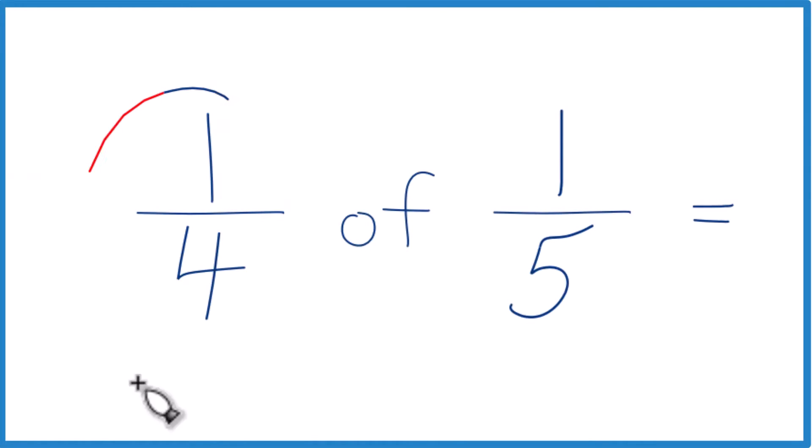Here's how you can find one-fourth of one-fifth. We have these two fractions, and when you have 'of' between them, you can think of 'of' as multiplication.